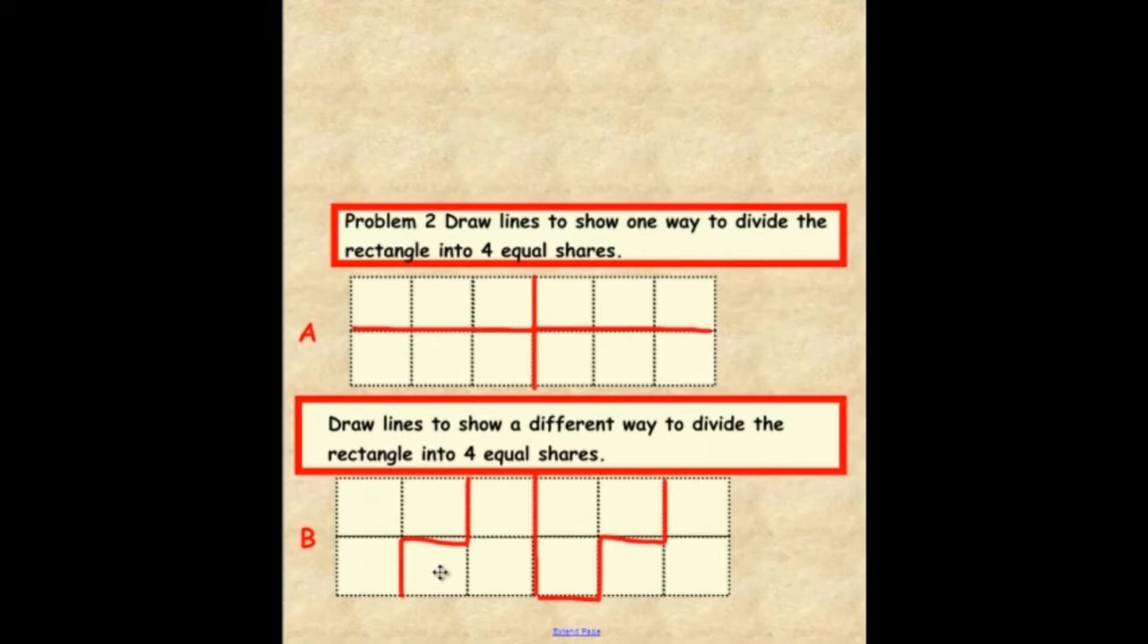And in B, we have one, two, three, one, two, three, one, two, three, and one, two, three. We have four equal shares in this one also.